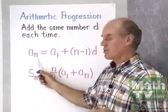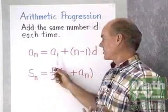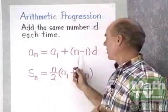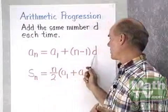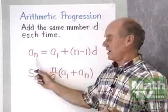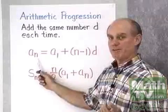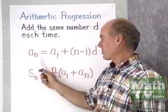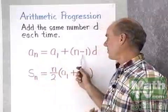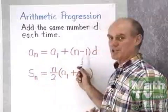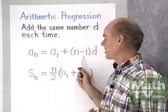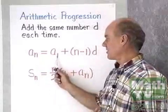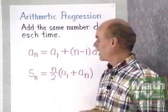The nth term for every arithmetic progression is a sub 1, the first term, plus n minus 1 times d. To find the nth term in an arithmetic progression, it's the first term plus n minus 1 times d. One less than the term number times d, added to the first term, gives you the nth term.